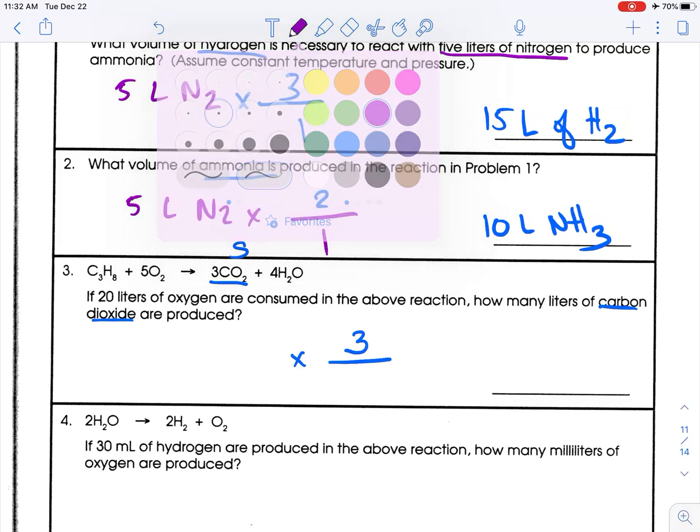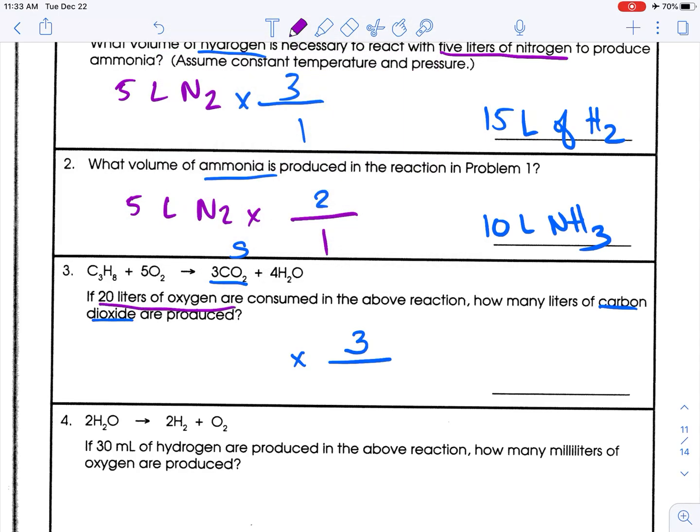What do I know? I know 20 liters of oxygen. This is my known. And remember, I see oxygen is in a whole bunch of different compounds, but I want just elemental oxygen sitting all by itself. 20 liters of oxygen, and the coefficient of oxygen is a 5.